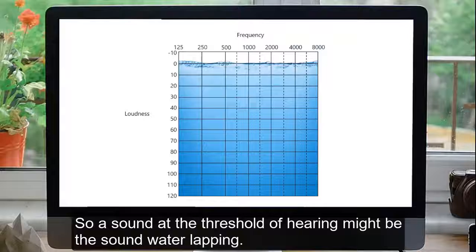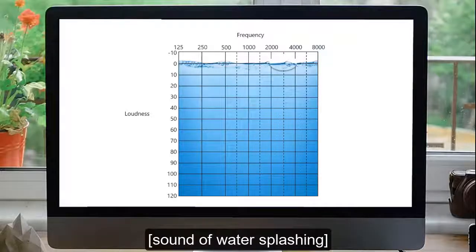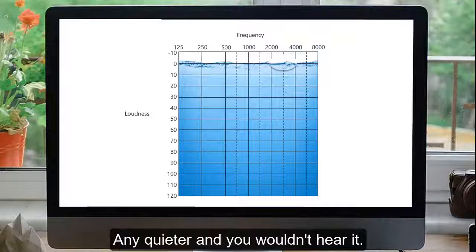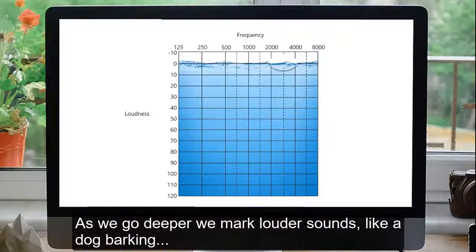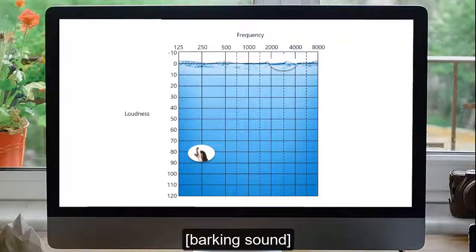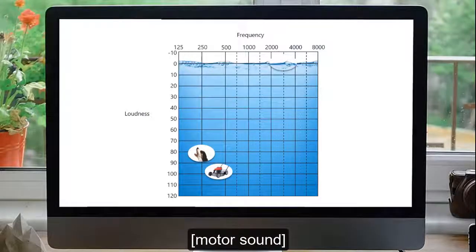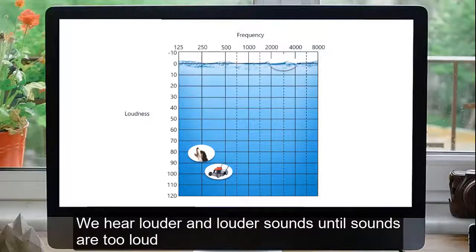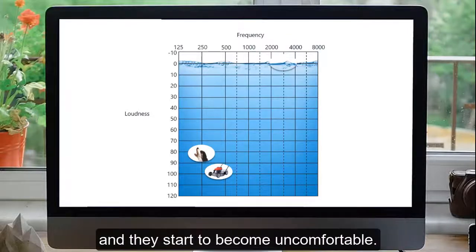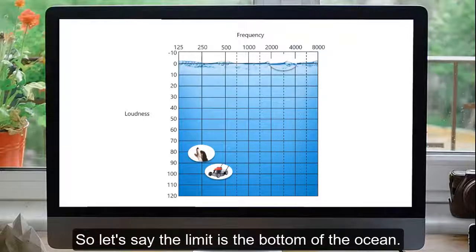So a sound at the threshold of hearing might be the sound of water lapping. Any quieter, and you wouldn't hear it. As we go deeper, we mark louder sounds like a dog barking, or a lawn mower. We hear louder and louder sounds until sounds are too loud, and they start to become uncomfortable. So let's say that limit is the bottom of the ocean.